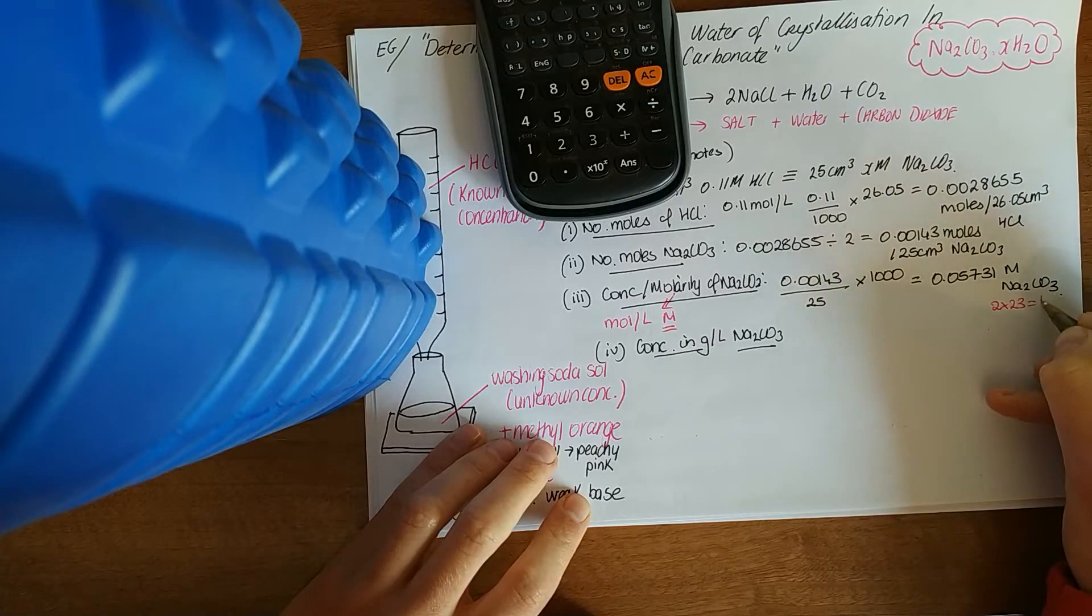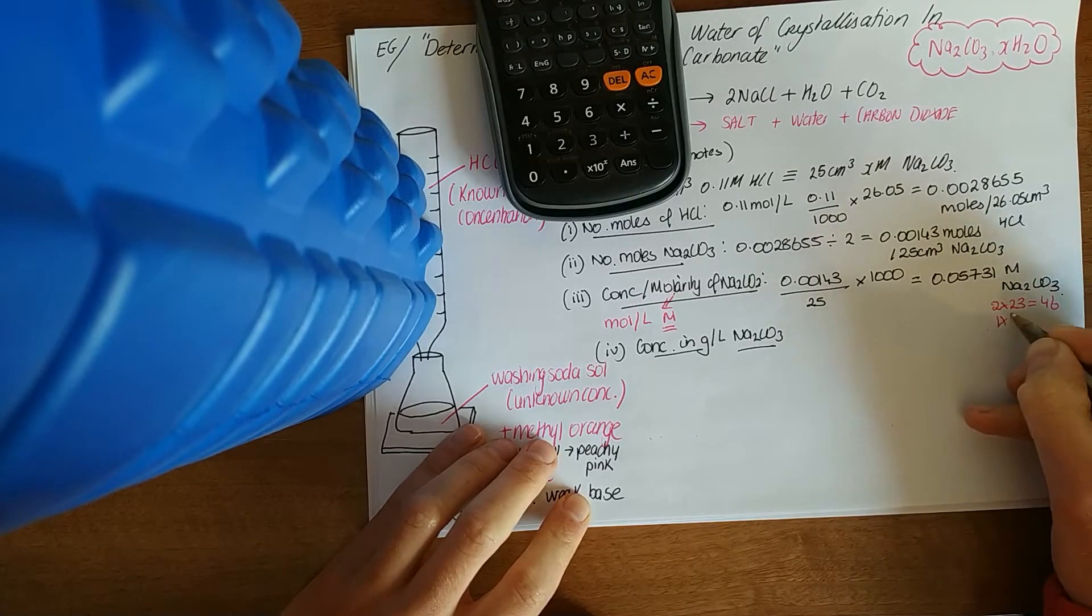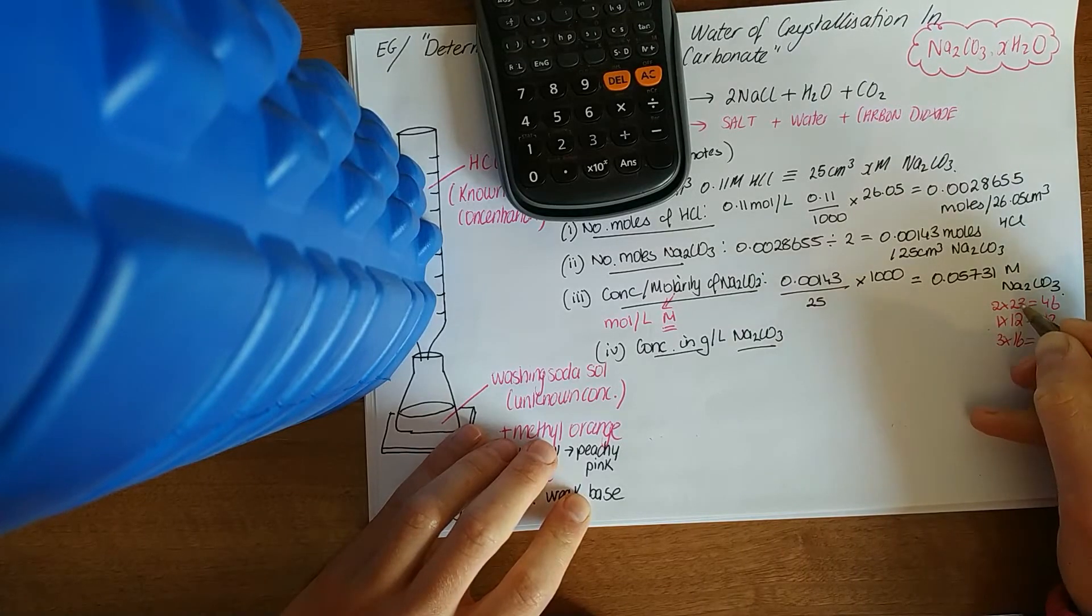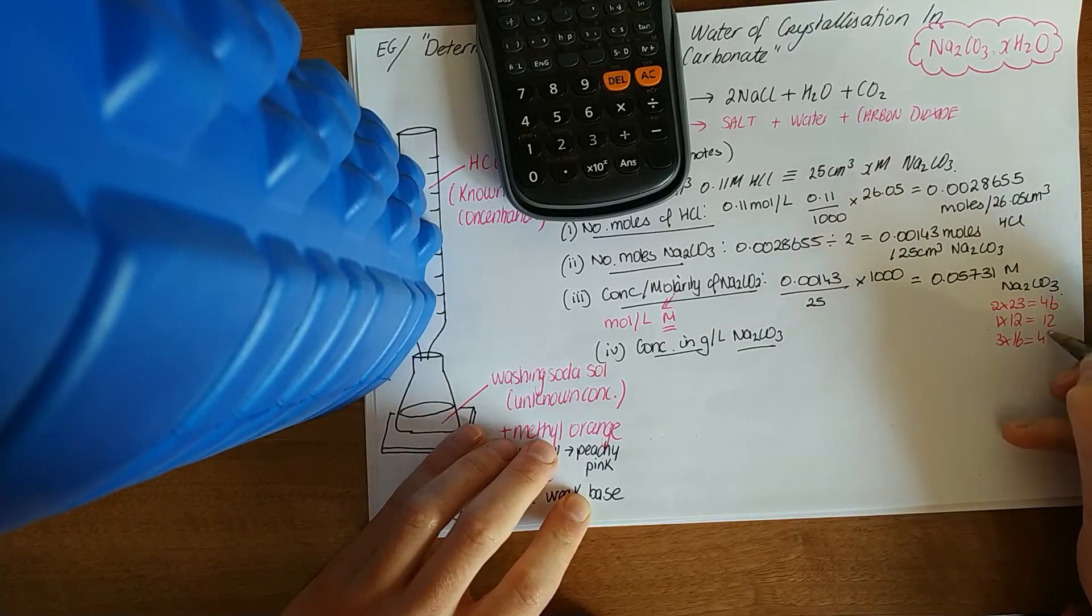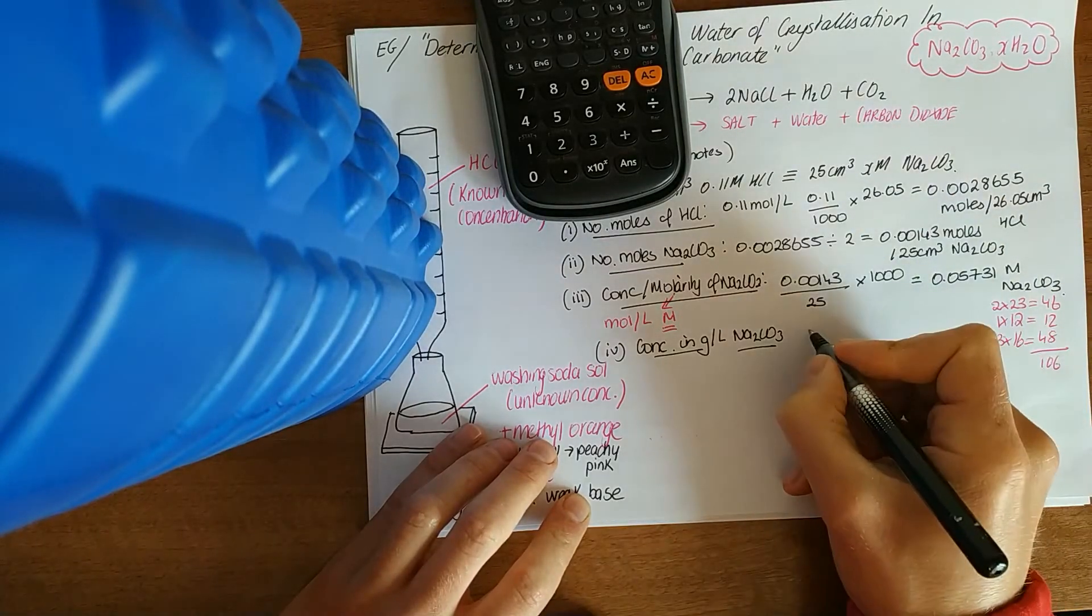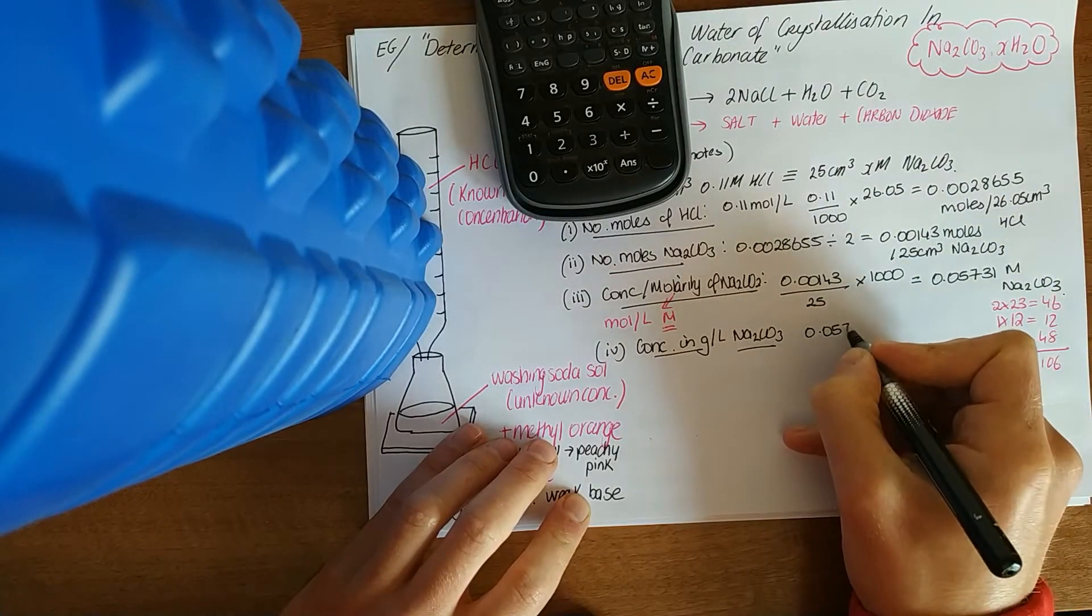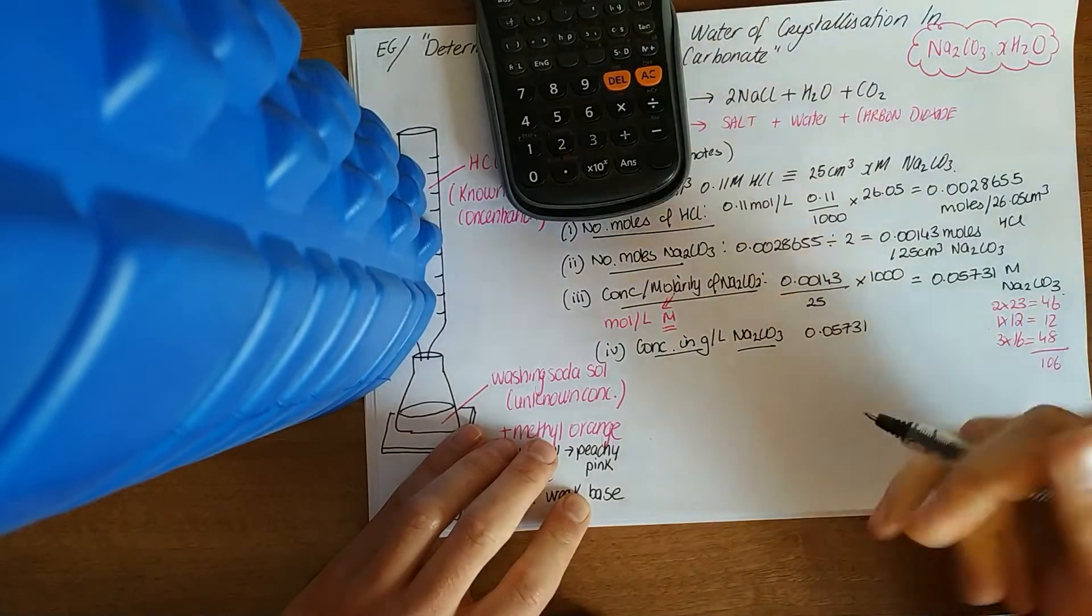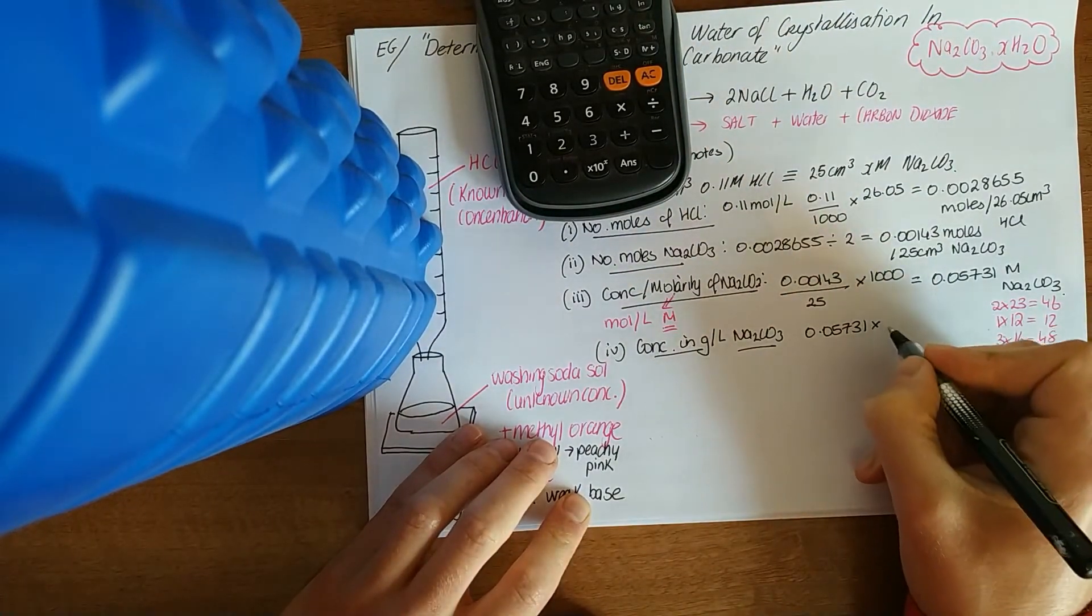The first thing you've got to do is work out the relative molecular mass of this. 2 by 23 from your sodium is 46, 1 by carbon, 3 oxygens. Add those up, you get 106. So 0.05731, the moles part of a triangle, to go up to grams per litre, multiply by the relative molecular mass.